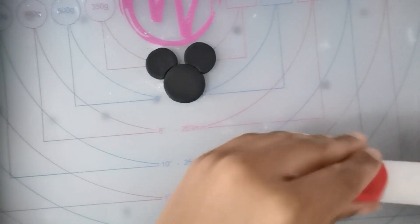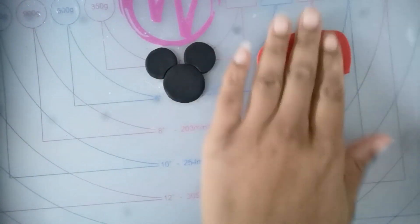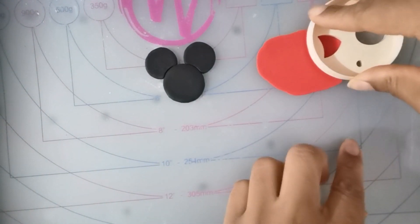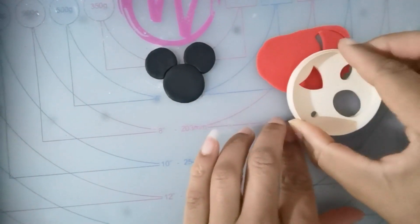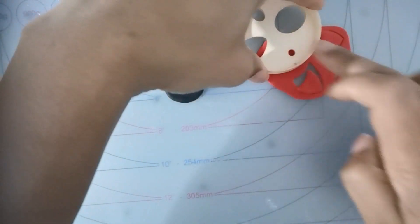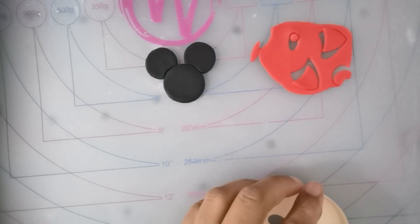Now I'm rolling out some red fondant and I'm going to make the bow and the middle of the bow. I'm using this shape cutter and cutting out two triangle pieces and one mini circle, and I'm going to put them together on the face.